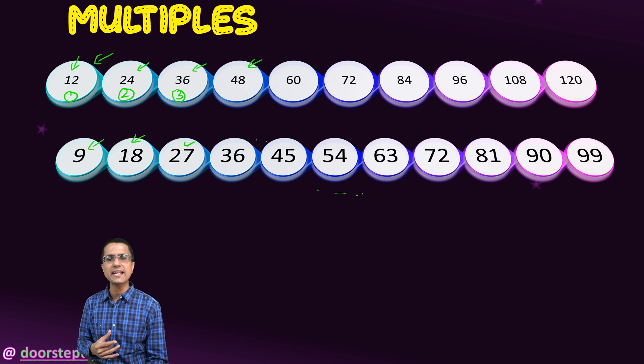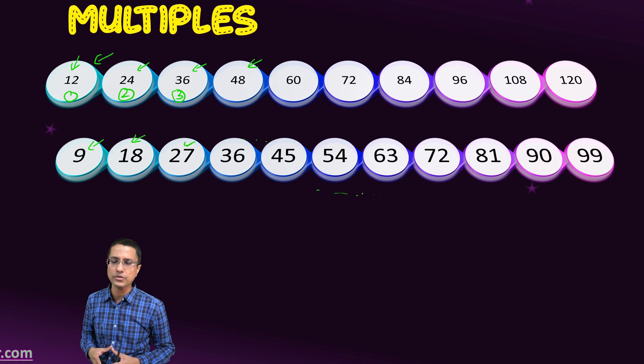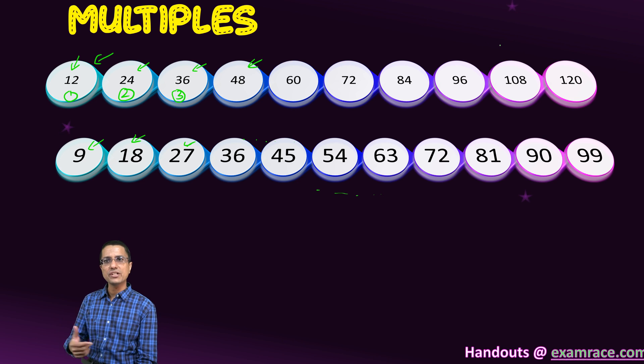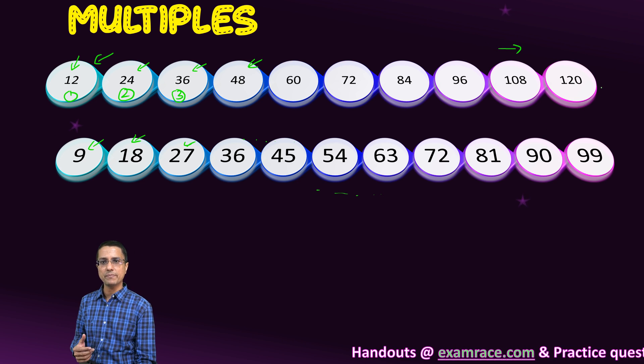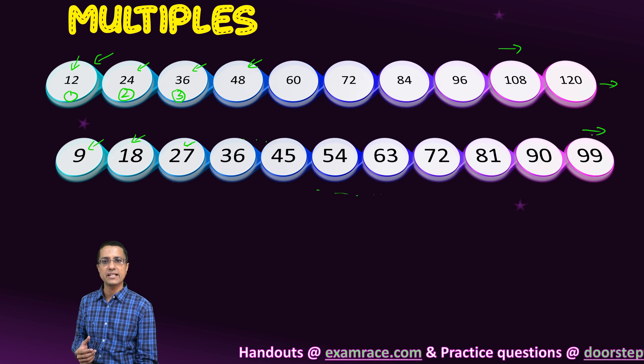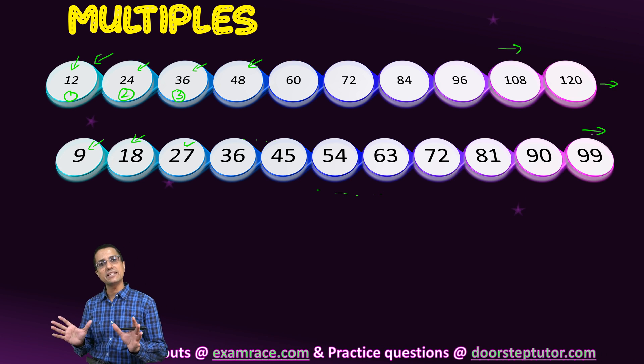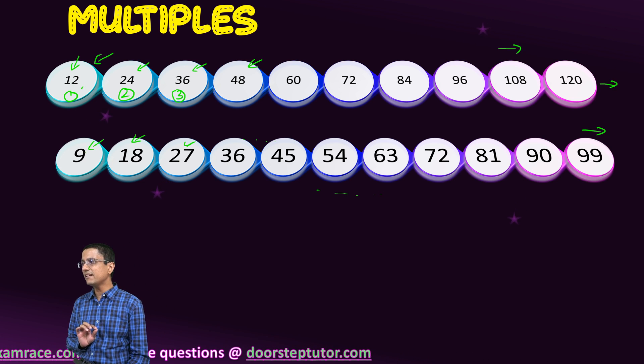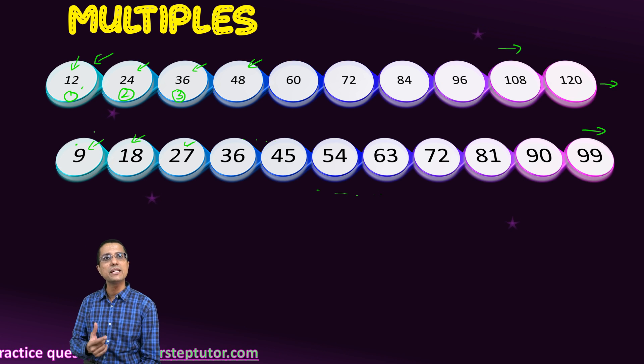These multiples—I can write as many multiples as possible. Each time I multiply the number with an ever larger number, I would get ever larger multiples. So this series would never end. The series of multiples never ends. That is the first thing to note. Second thing is that the number itself, the number is always a multiple of itself.